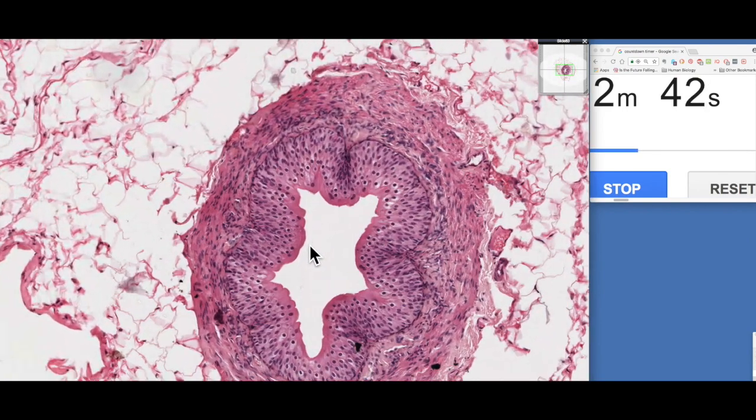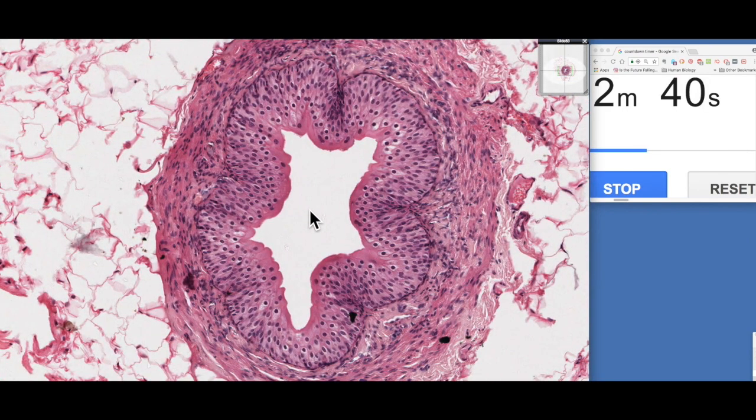the ureter is lined by a specialized type of epithelium known as urothelium, or urinary epithelium, or transitional epithelium. It's made up of a stratified epithelium in which its cells are actually able to undergo a large amount of stretch.